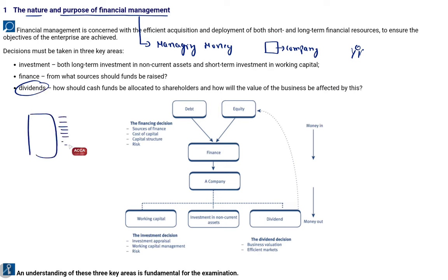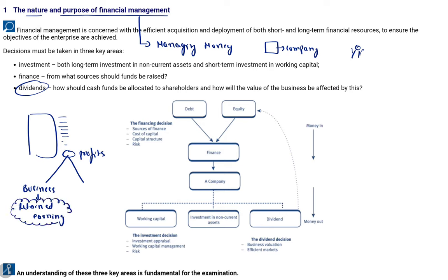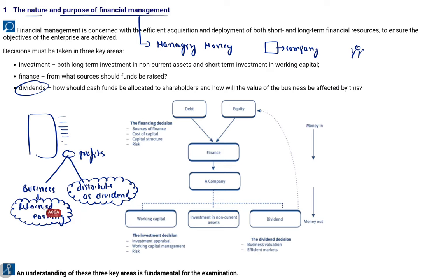Last comes the dividend decision. Once the business earns profits, a financial manager must decide what to do with those profits — either keep them in the business as retained earnings for future projects, or distribute part of the profit as dividend to shareholders. The financial manager decides how much to retain and how much to distribute.